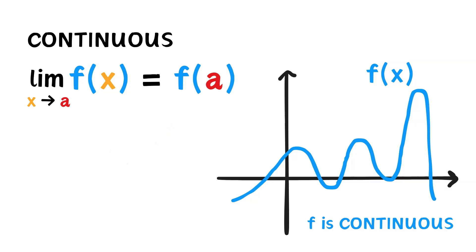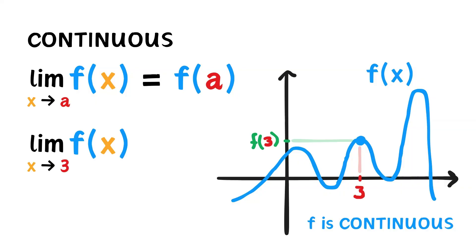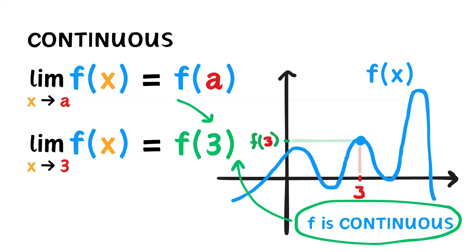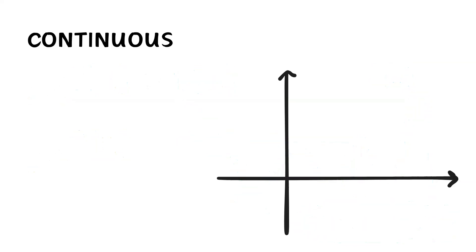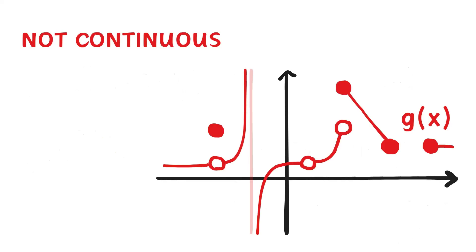Now, why is continuity useful? Let's say we were told to find the limit of f of x as x approaches 3. Well, since we know the function is continuous, we know that the limit must be the function value at 3, or f of 3. Now, a function is not continuous if there are jumps, holes, or gaps. These are called discontinuities. Functions with discontinuities cannot be traced in one stroke of a pen.